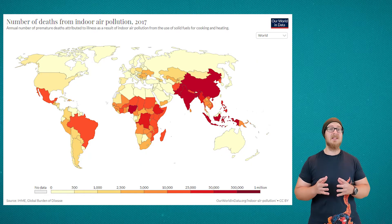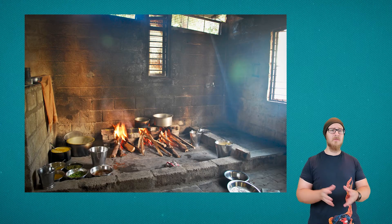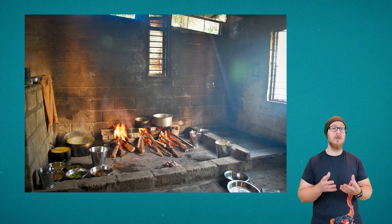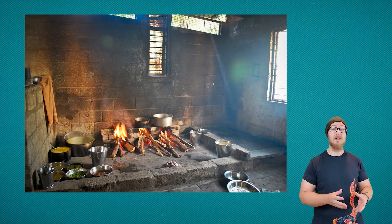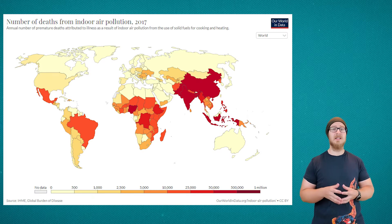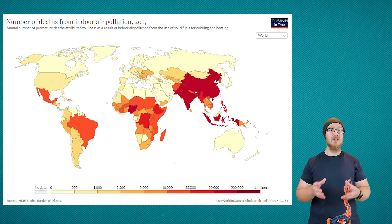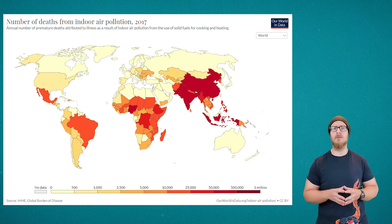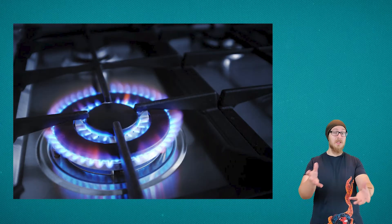Indoor air pollution is highest in the developing world, and it stems from the burning of wood or charcoal indoors with very little ventilation. Due to the buildup of carbon monoxide and particulate matter, rates of pneumonia, asthma, heart disease, and cancer are increased. This leads to about 1.6 million deaths per year in the developing world linked directly to indoor air pollution.